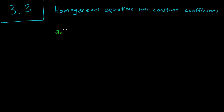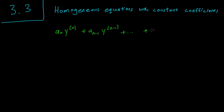So let's consider an equation like this. We have the a_n's which are constant terms, and so on down to a_1 plus a_0.